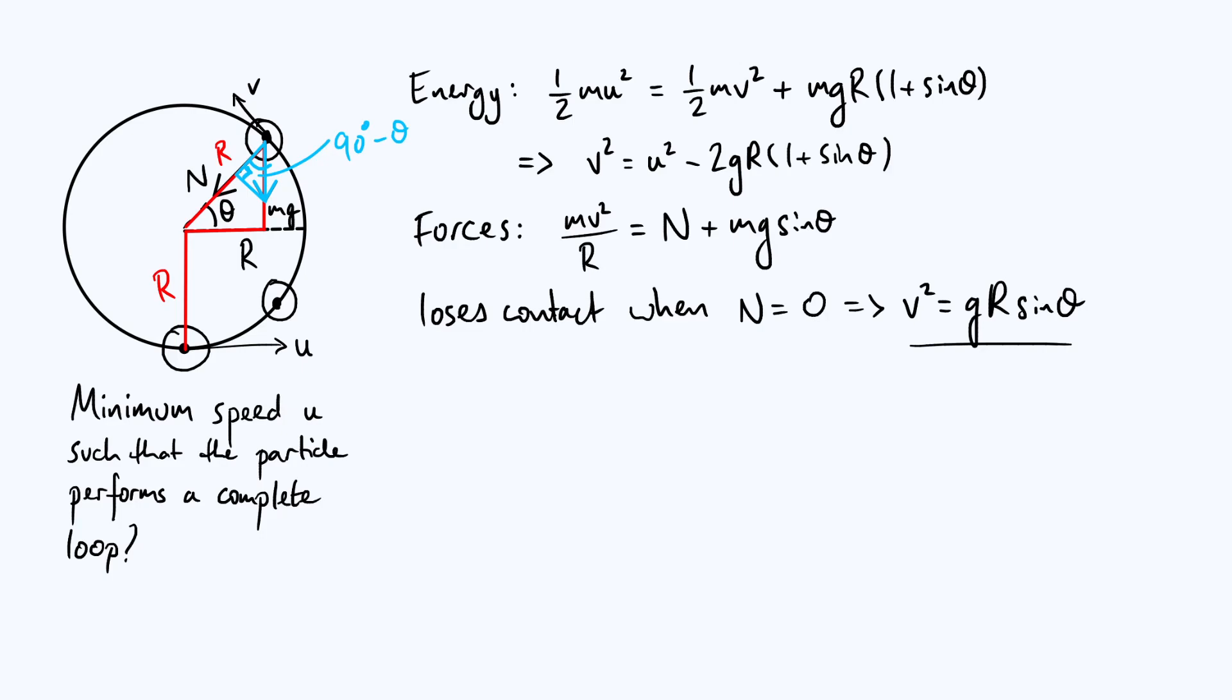Now we can combine equation one from energy with equation two from the contact condition. We equate them because they both have v² on the left, so gr sin θ = u² - 2gr(1 + sin θ). Getting u² on its own and combining the sin θ terms, we get u² = gr(2 + 3 sin θ). The interpretation is that if you want your particle to just make it to angle theta and then lose contact, you need the initial speed u given by this equation.